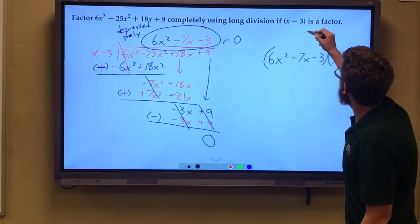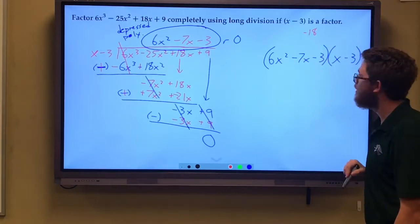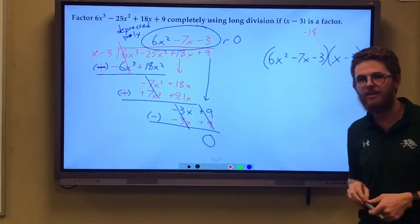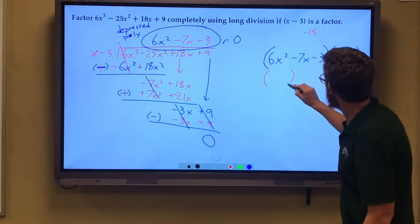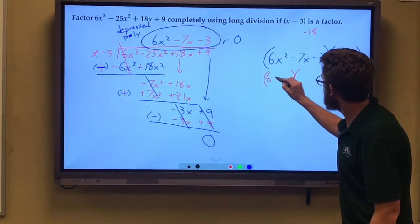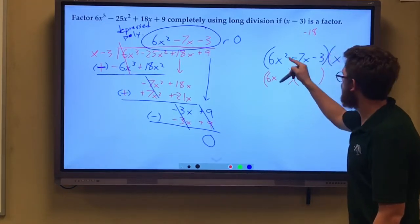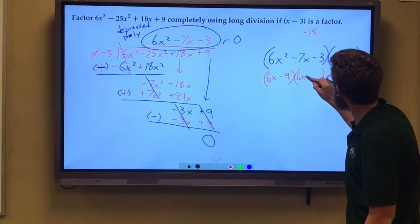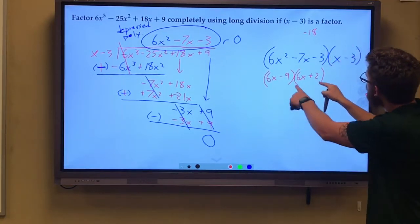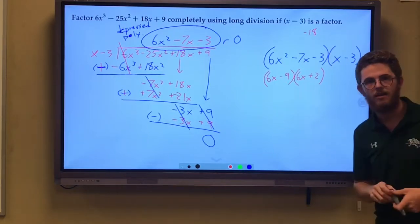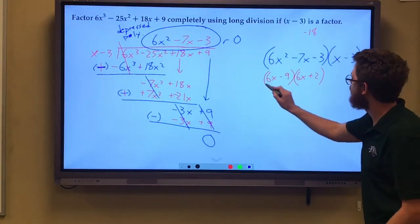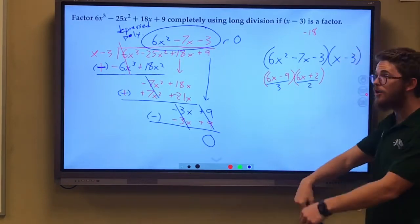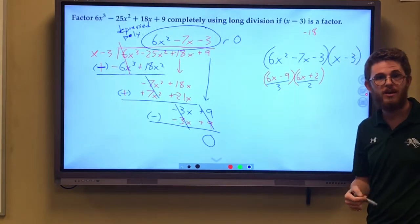Well, we do that. 6 times negative 3 gives me a negative 18. And I'm thinking to myself, what are two numbers that multiply to get negative 18 and add to get negative 7? My method, I put a 6x in front of both. I look at that negative 18. I know that it is a negative 9 and a positive 2 that multiply to get that, add to get a negative 7. I'm going to divide these by as much as possible. I can divide this one by 3, this one by 2, undoing that multiplication by 6 from earlier.